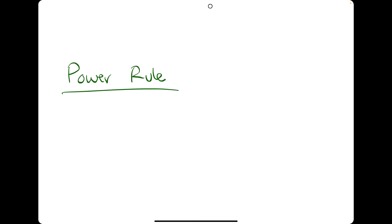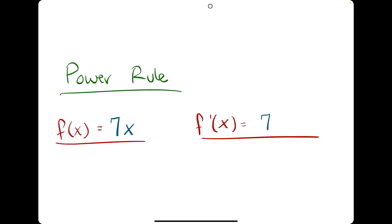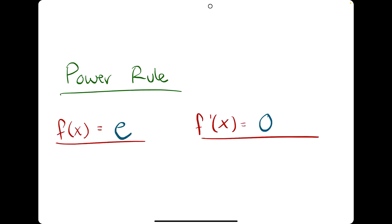Before we jump into the problems, let's go over a few things about derivatives. In the last quiz, we learned about the power rule — how to take derivatives of functions using the power rule. A few important ideas: if we are taking the derivative of a constant times x, the derivative will just be that constant. For example, if the function is 7x, then the derivative is just 7. Or if the function is pi times x, then f prime is just pi.